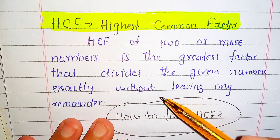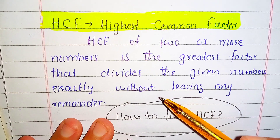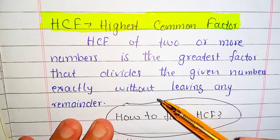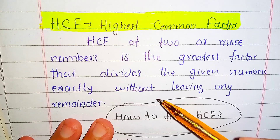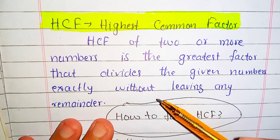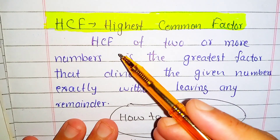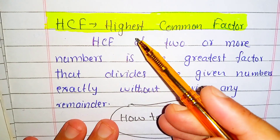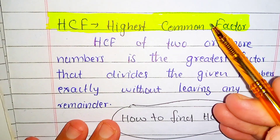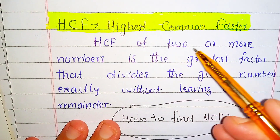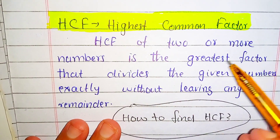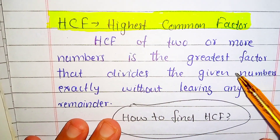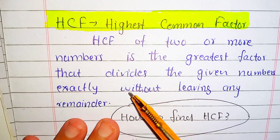Hello everyone, welcome to our channel. In this video we are going to talk about HCF, or Highest Common Factor. HCF, or Highest Common Factor, of two or more numbers is the greatest factor that divides the given numbers exactly.